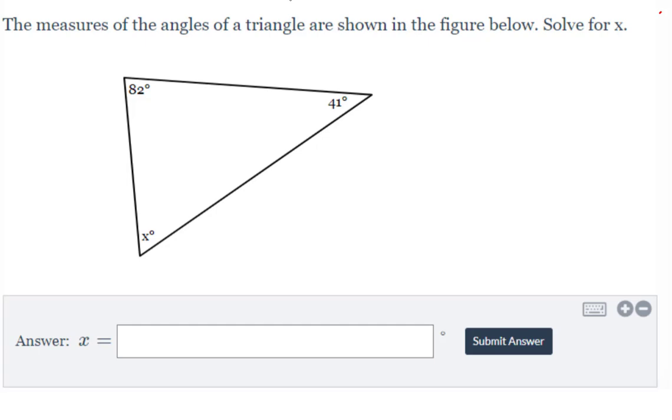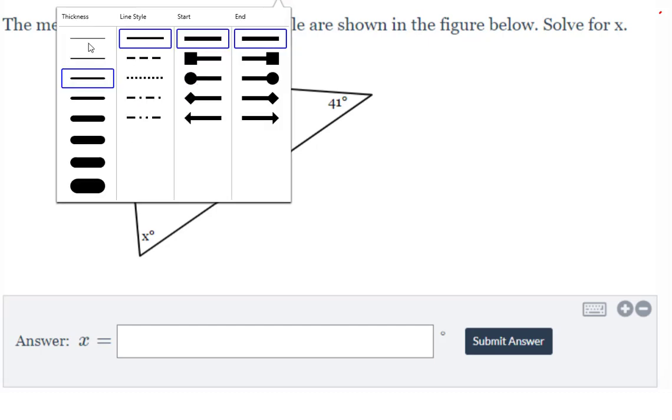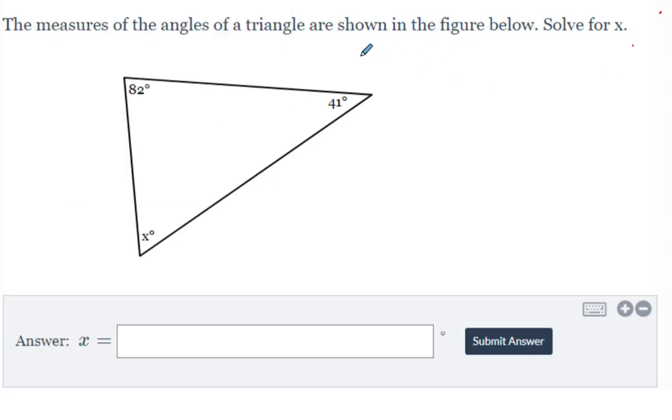The measures of the angles of a triangle are shown in the figure below. Solve for x. Okay, so the first thing I'd like to remind you is that a triangle, if you add the interior angles, they have to add up to 180.